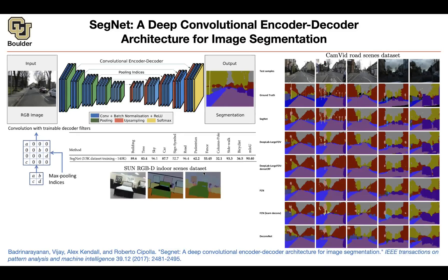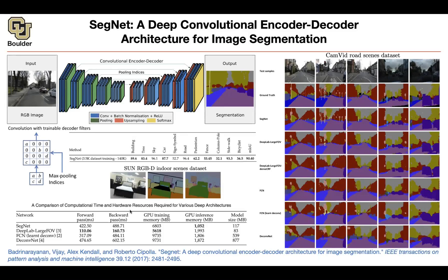Here's another example of indoor scenes. Now you're starting to see the applications — one is self-driving cars and the other is robotics. In terms of computational time and hardware resources, it is comparable to the rest of the networks we saw before. But when it comes to CPU inference memory, it's doing the best, because all you need to do is just copy the indices — just remember the indices, and that's going to be cheap. These are integer values and you don't have many of them.